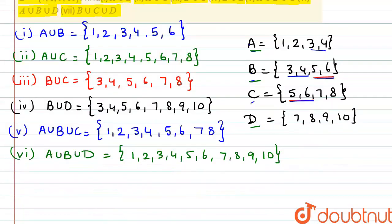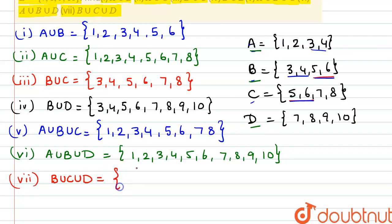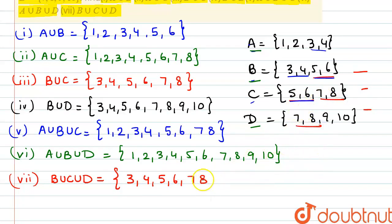In our last, 7th part, we have to find B union C union D. In B and C, 5 and 6 are common, so we write them only once: {3, 4, 5, 6, 7, 8}. Then in C and D, 7 and 8 are common, so we don't repeat them either. After 7 and 8, we directly add 9 and 10. So B union C union D = {3, 4, 5, 6, 7, 8, 9, 10}. These are all the values we had to find — these are our final answers.